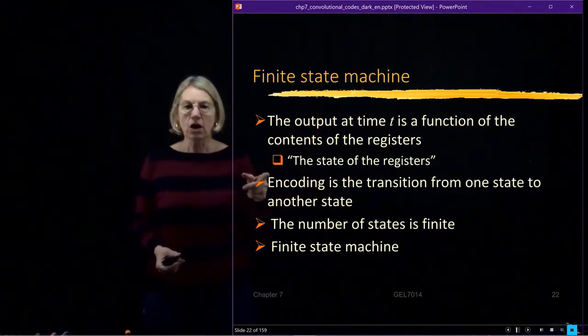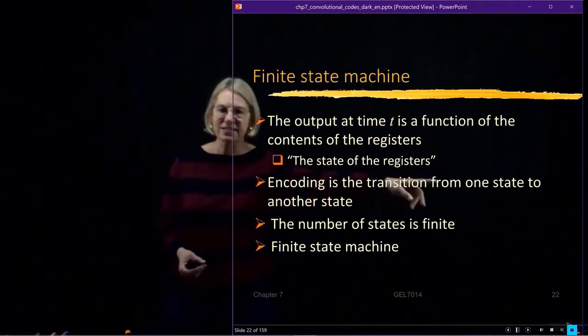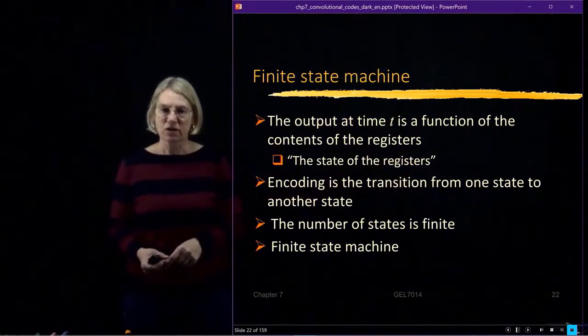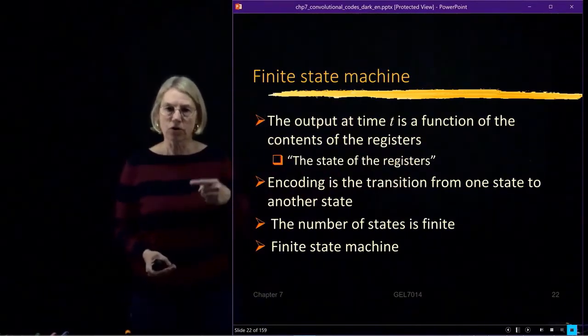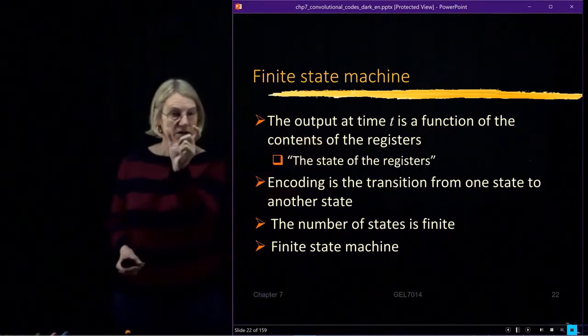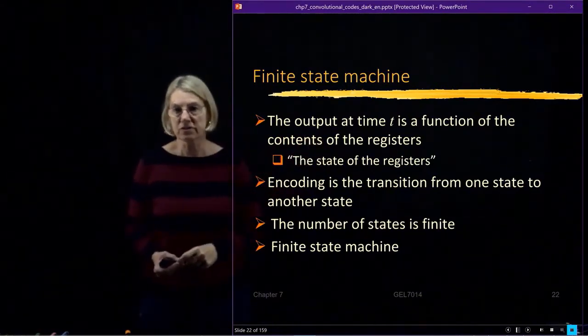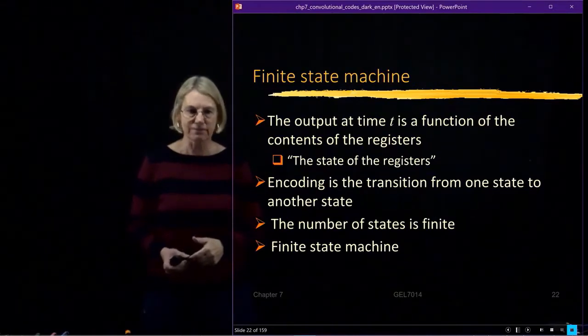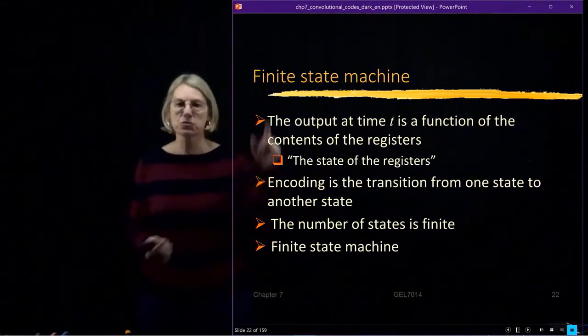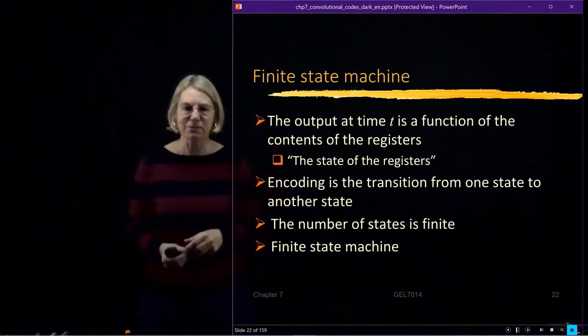So the encoding process you can think of as being a transition from one state to another state. We're going to think about the encoder stepping through different states based on looking at what are the entries of the shift register. Of course, the number of shift registers is finite, which is why we have a finite state machine.